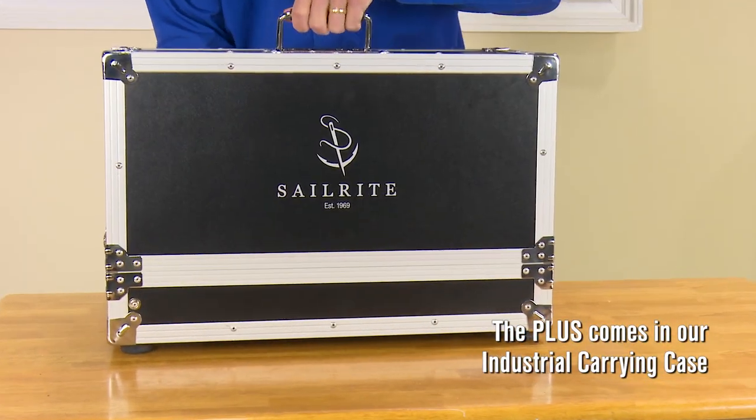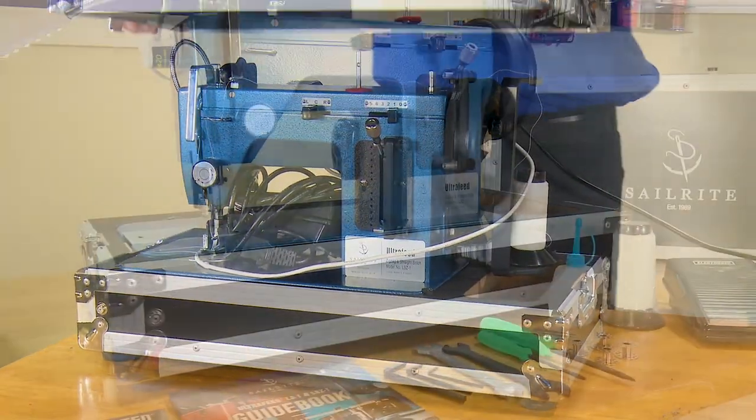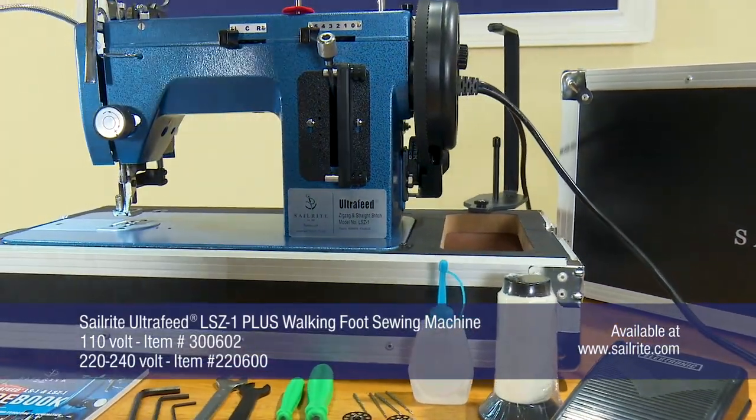This video highlights the Sailrite Ultrafeed LSZ1 Plus Package. The LSZ1 Plus Package is our mid-level sewing machine package, sewing both straight stitch and zigzag stitches.